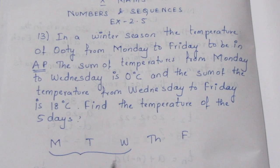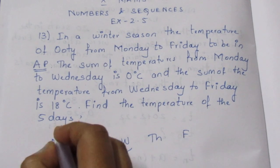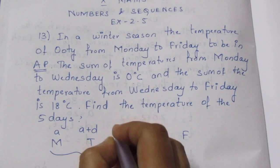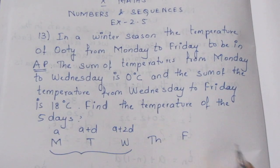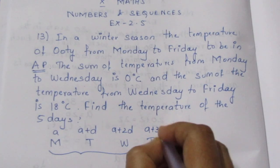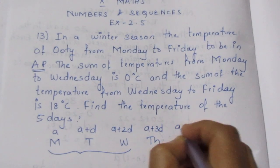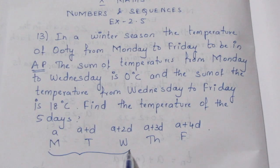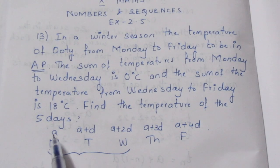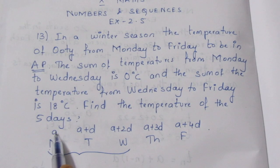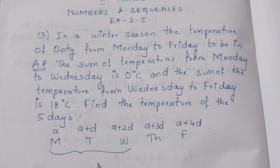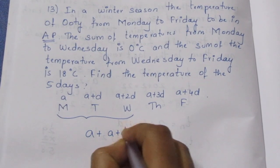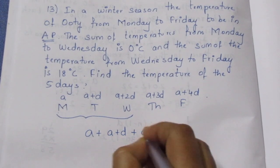Since the temperatures are in AP, we write the terms as: a, a+d, a+2d, a+3d, a+4d. The sum from Monday to Wednesday means we add the first three terms: a plus (a+d) plus (a+2d).